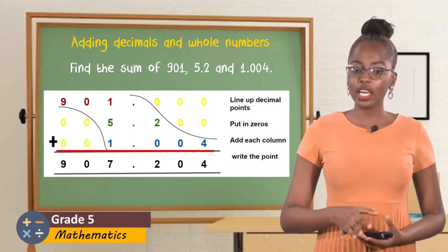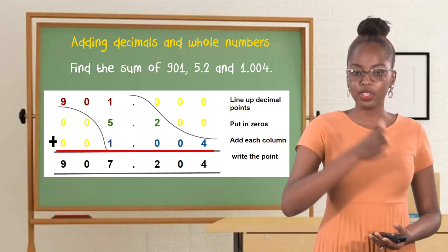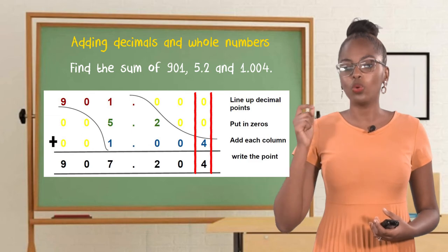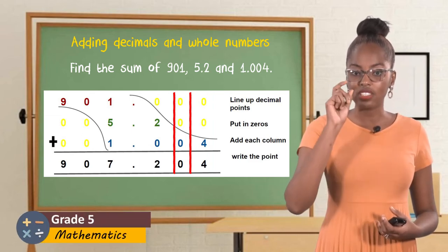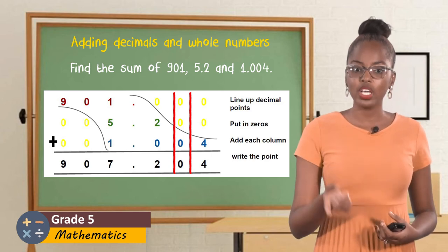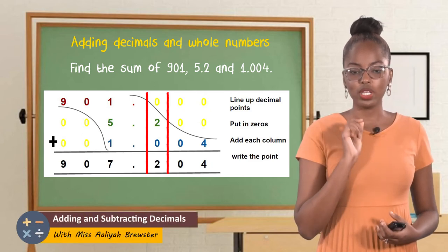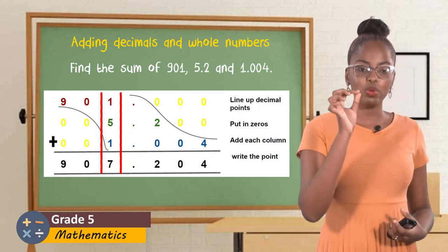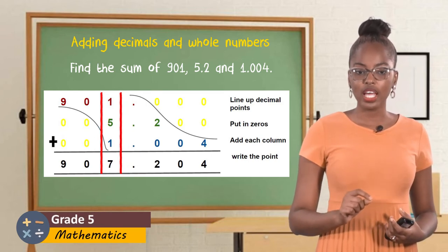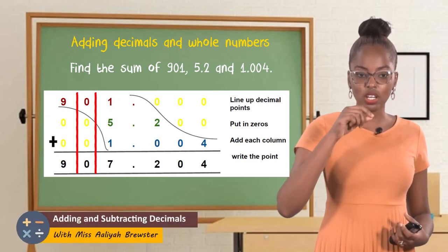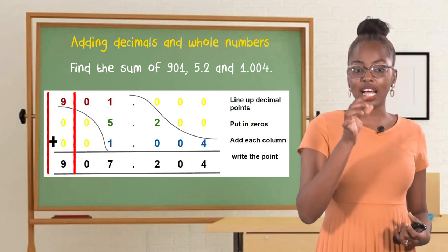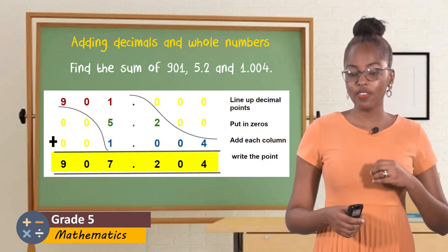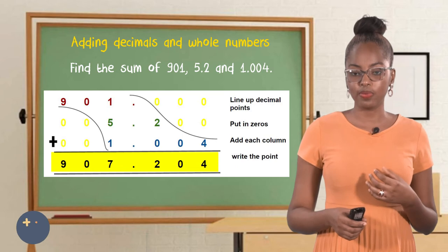The other number is five and two-tenths — we put a point directly under the first point, with five on the left side and two on the right side, and include zeros to make it the same length. The last number is one and four-thousandths, with the point lining up directly under the second point, and zeros added to match the length. Now we add each column, starting from the right and moving to the left. Zero plus zero plus four gives us four. Zero plus zero plus zero gives us zero. Zero plus two plus zero gives us two. Then we write the point. Then one plus five plus one gives us seven. Zero plus zero plus zero gives us zero. Nine plus zero plus zero gives us nine. Therefore, the solution is nine hundred and seven point two hundred and four thousandths.